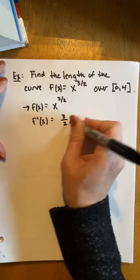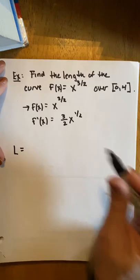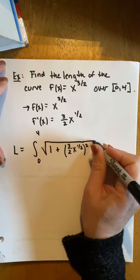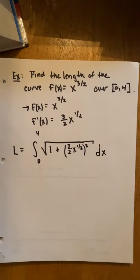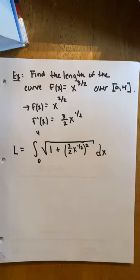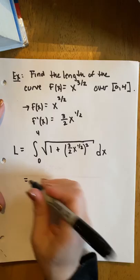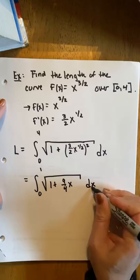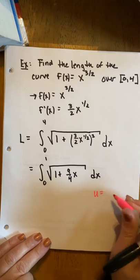The length of the curve is x to the 3 halves, the derivative, 3 halves x to the 1 half. So the length of the curve over the interval 0 to 4 would be the integral from 0 to 4 square root of 1 plus 3 halves x to the 1 half quantity squared dx. This might look horrible at first when I'm grabbing my calculator. It's really not terrible because once we distribute, we realize that we're actually just integrating 0 to 1, square root of 1 plus, well don't forget to square the 3 halves, 9 fourths, and then x to the 1 half squared is just x.